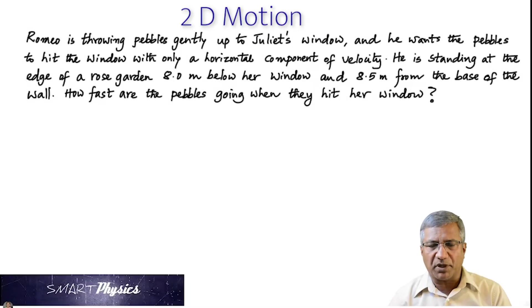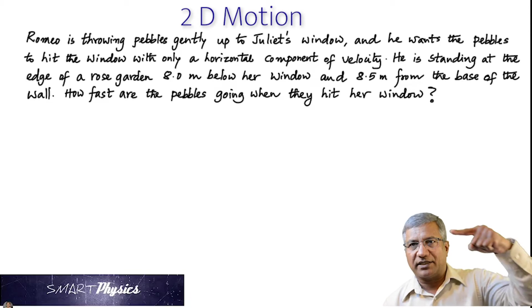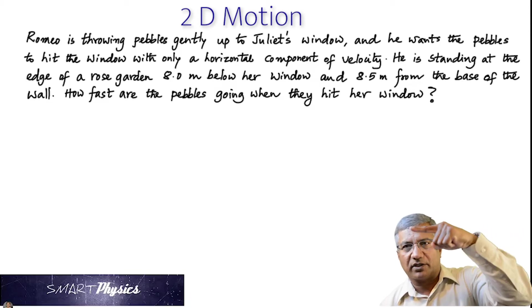Romeo is throwing pebbles gently up to Juliet's window and he wants the pebbles to hit the window with only a horizontal component of velocity. Like that. Hit the window with a horizontal component.